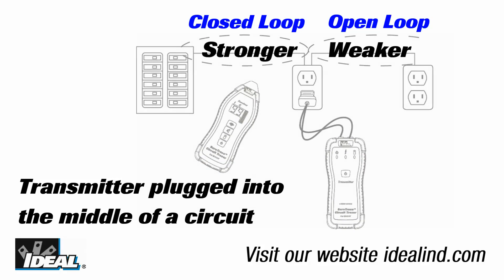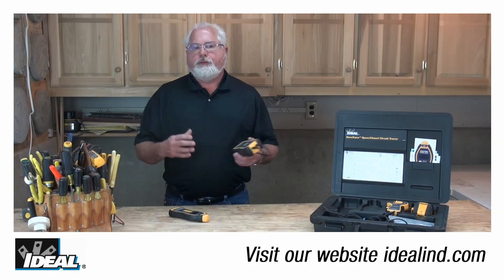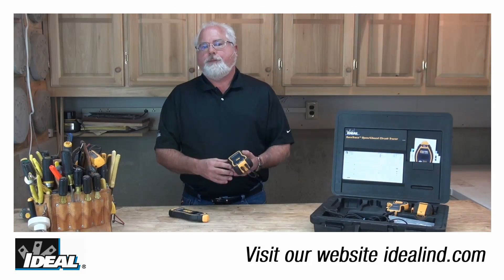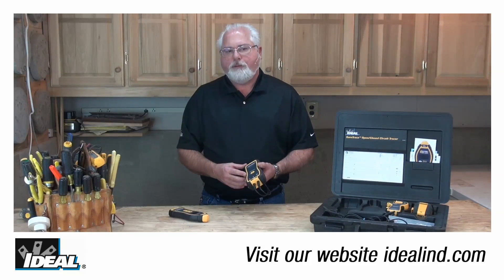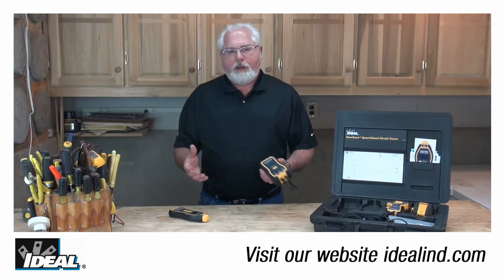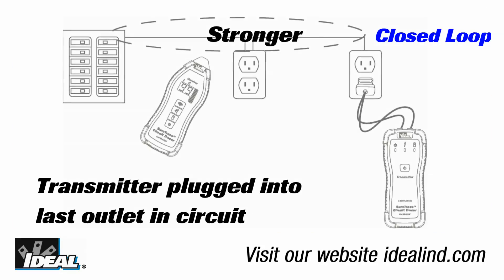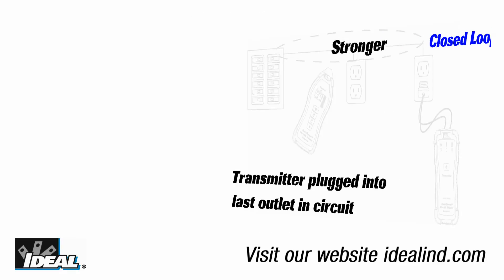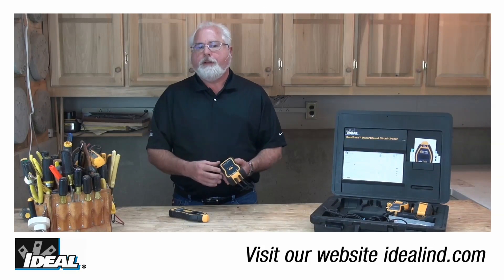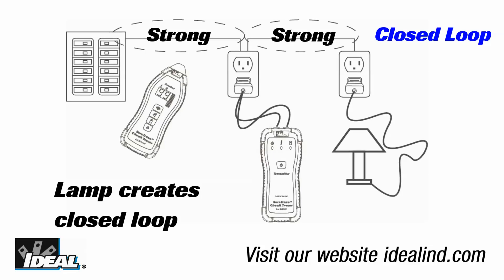In an open circuit no current flows, so the electromagnetic field produced is much weaker than we want. However, in a closed circuit the injected voltage also induces a current flow that produces a much stronger electromagnetic field, which is what we really want. We can do this by simply placing a load like a lamp on the furthest outlet in the circuit and turning it on.